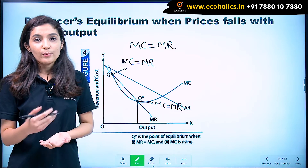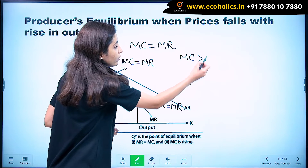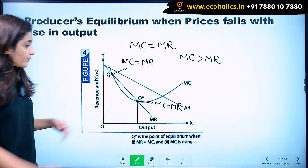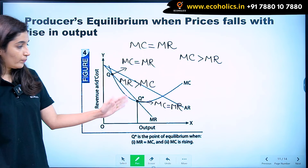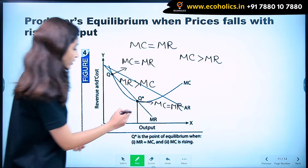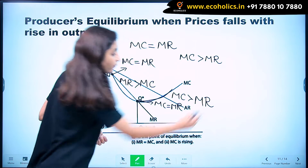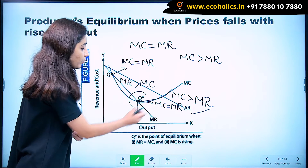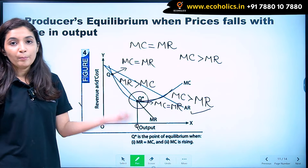This is where the second condition comes into picture. The second condition is that after MC equals MR, our MC should be greater than MR. At the lower intersection point, after that point our marginal revenue is greater than marginal cost. But at the upper intersection point, our marginal cost is greater than marginal revenue. Therefore, the producer will be producing OQ level of output at equilibrium and will be earning maximum profit.